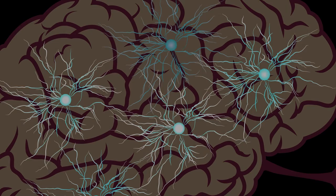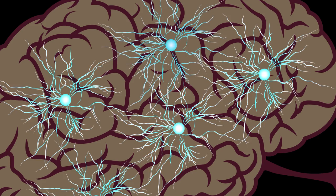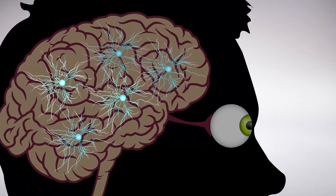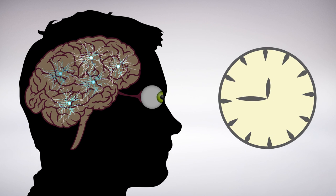These results suggest dendrites aren't just passive cables ferrying information in the brain as previously thought. Instead, the branches take an active role in processing information, shaping it, ultimately influencing how we see.